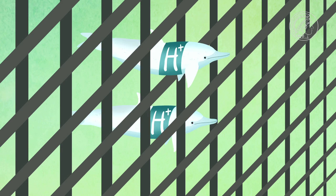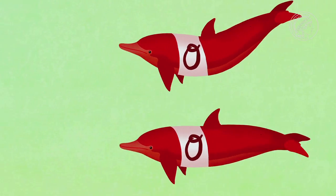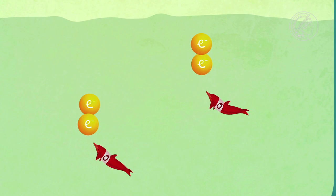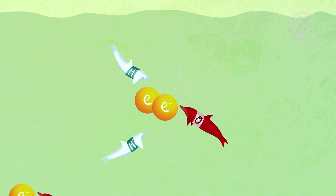The membrane behind only allows the protons to pass through. On the other side, oxygen flows into the fuel cell. Each oxygen atom grabs two electrons and the protons also latch on. The result is the product of the reaction in the fuel cell: H2O, better known as water.